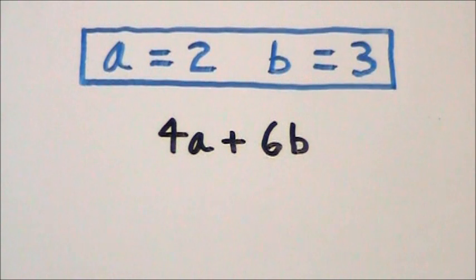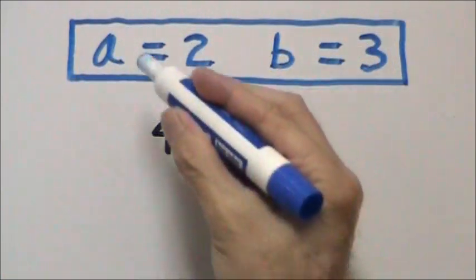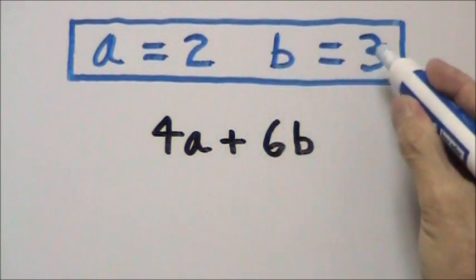Our problem is 4a plus 6b. What we have to do is replace the variables a and b with the numbers that they represent. In this problem, a equals 2 and b equals 3.